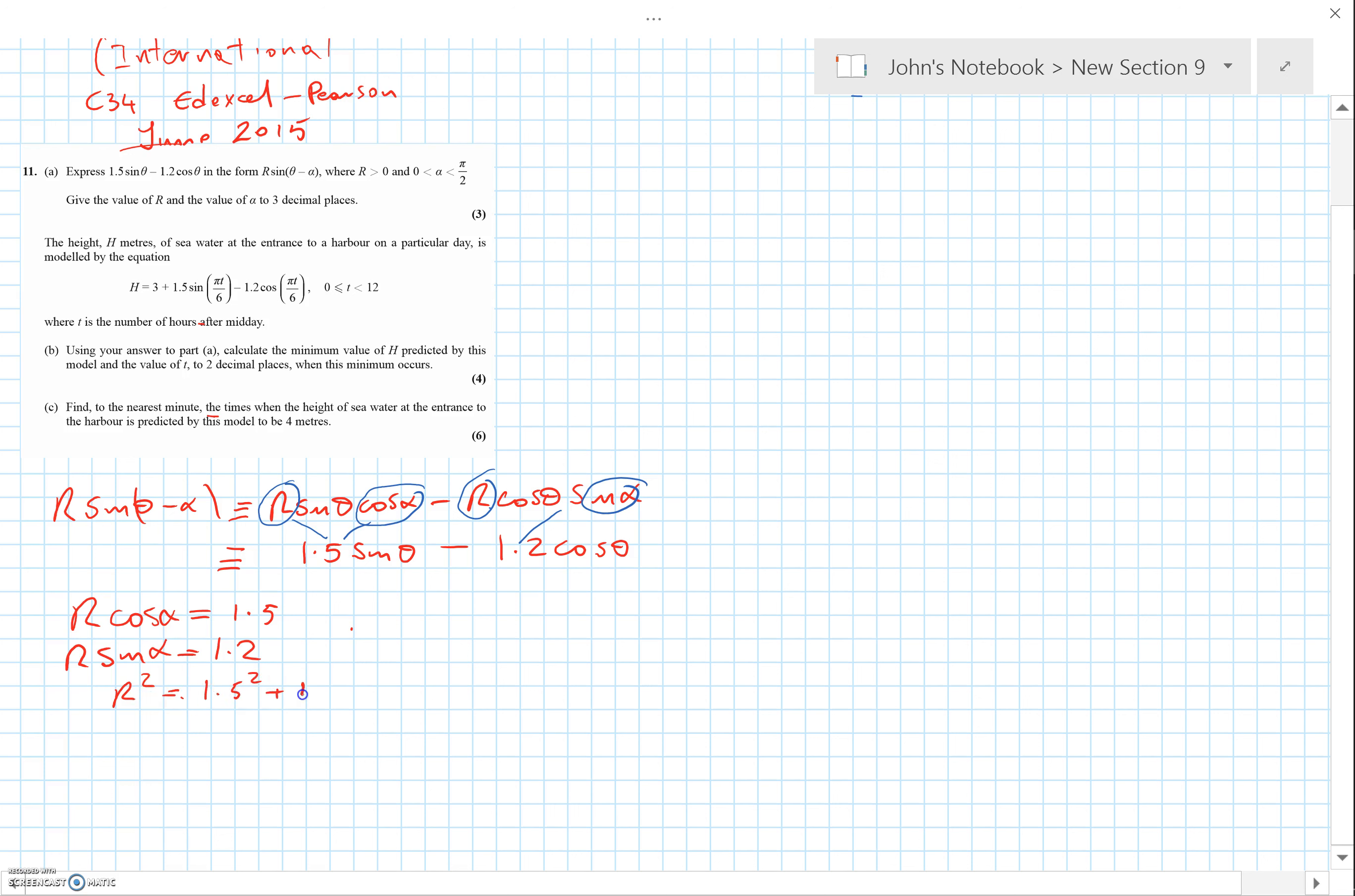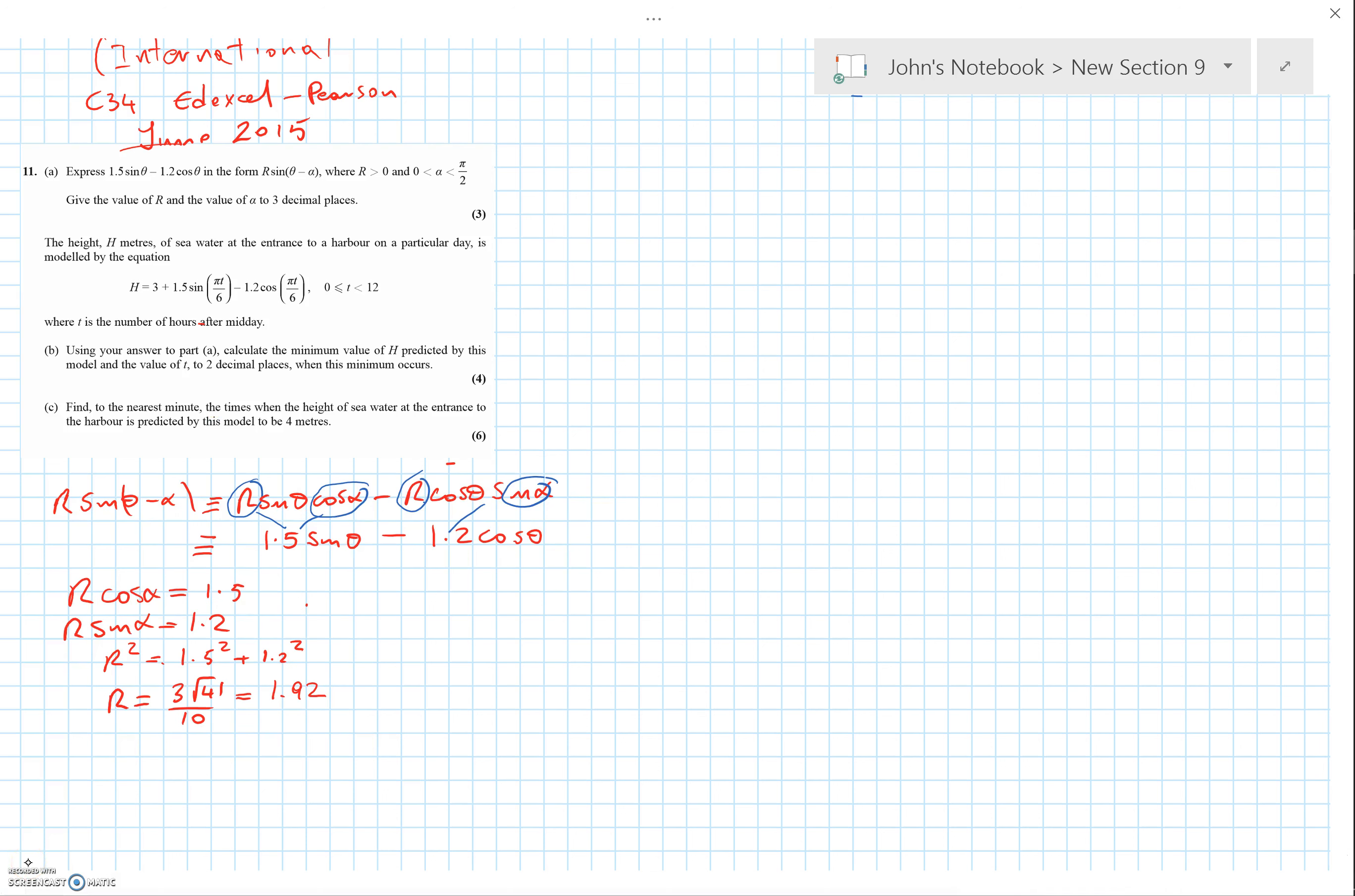We can quickly get to R² equals 1.5² plus 1.2². When we work out the exact value, taking the square root gives us R equals √41/10. That's the exact answer. It's worth writing both. If we give that to three significant figures, it's 1.92.